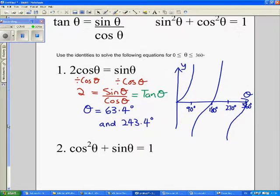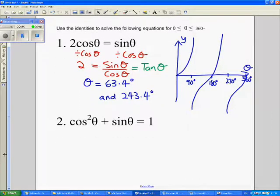For my second equation, because it involves cos squared, I need to use the identity sin² θ plus cos² θ equals 1. We need to first of all rearrange that equation so that we can replace cos² θ.